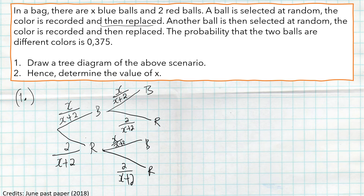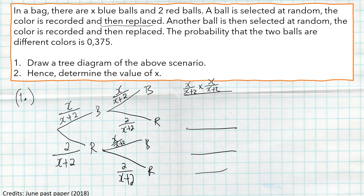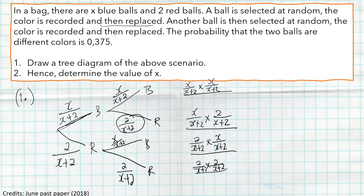We can now write the outcomes. The blue-blue outcome has probability x/(x+2) × x/(x+2); blue-red is x/(x+2) × 2/(x+2); red-blue is 2/(x+2) × x/(x+2); and red-red is 2/(x+2) × 2/(x+2). That completes our tree diagram for this scenario.